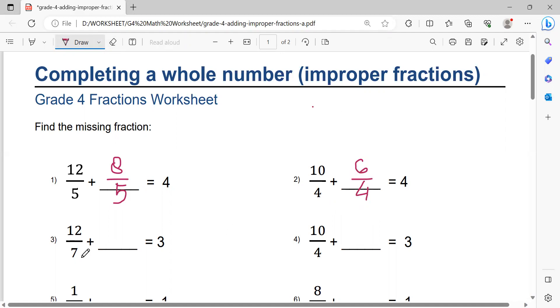Now this one. 7 times 3 equals 21. 21 minus 12 equals 9. 9 over 7.